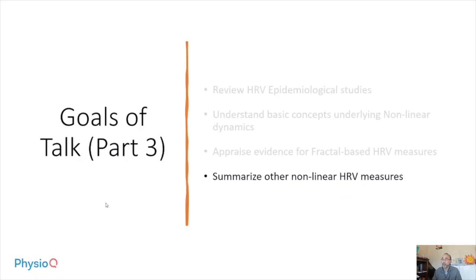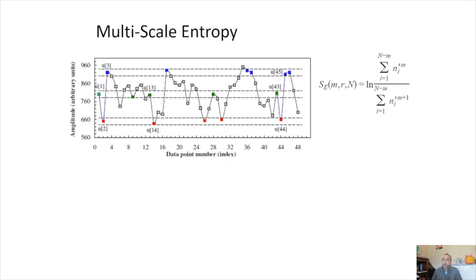Finally, I'd like to summarize other nonlinear heart rate variability measures. Given the limited time, I am not going to go into all the other alternative nonlinear measures in great detail, but the one that has probably received the most attention is multiscale entropy.